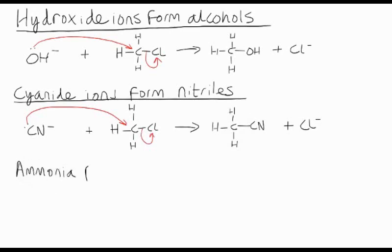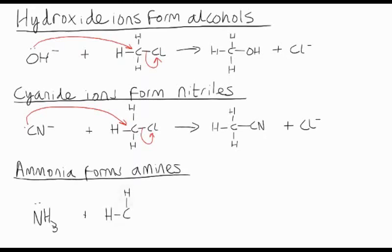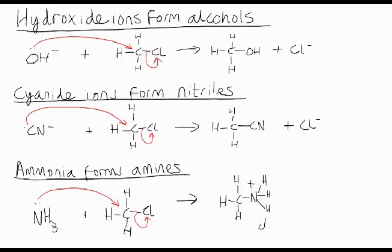When ammonia acts as a nucleophile, it will form an amine. Again, it's the electron pair on the nitrogen that attacks the delta plus carbon of the haloalkane and breaks the C-Cl bond. We attach the ammonia molecule where the halogen was, but the three hydrogens are still attached, which means the nitrogen has four bonds, so notice that positive charge on the nitrogen atom — don't miss that. We can deprotonate that molecule by using another ammonia molecule to remove one of those protons, which removes the positive charge to give us an amine and an ammonium ion.